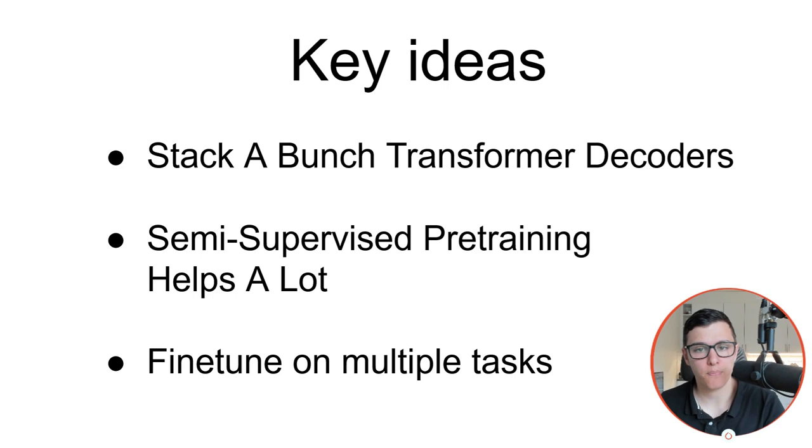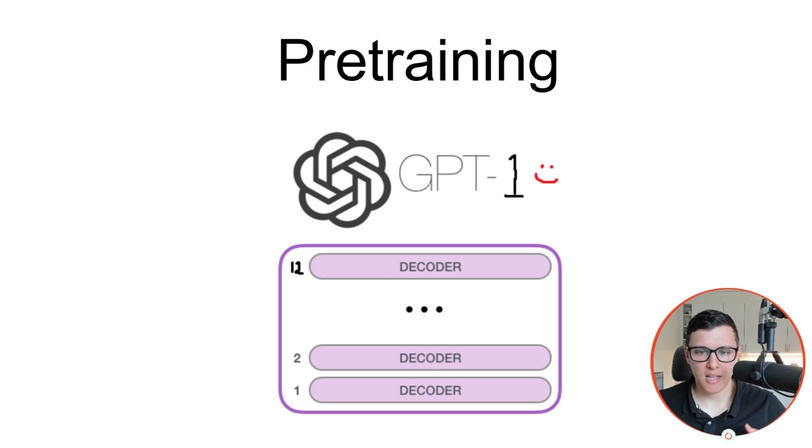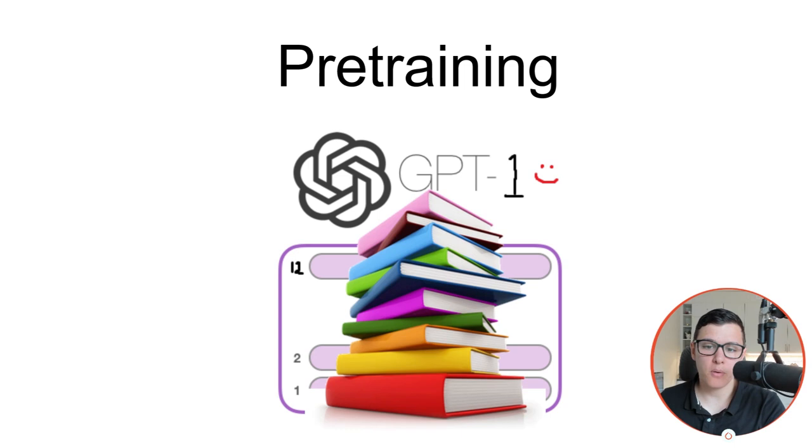So we already talked about the first point, which is that we just stack a bunch of them on top of each other. The pre-training step is that we take this GPT model, a stack of these decoders of the transformer architecture, and we basically just throw a bunch of books at it and ask it to learn from those books.